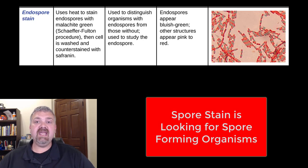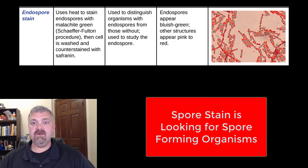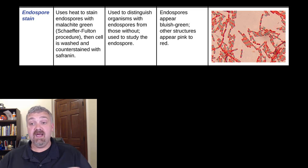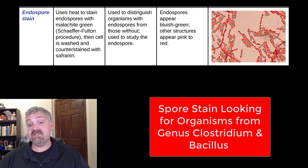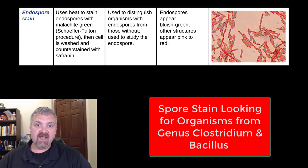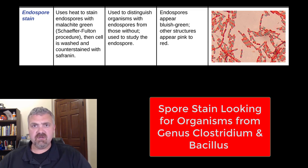Next we have the spore stain or the endospore stain. You'd use this anytime you are concerned you're dealing with a spore-forming organism, and that would be Clostridium and Bacillus. Bacillus — think Bacillus anthracis, the causative agent of anthrax, Bacillus cereus, Bacillus subtilis — these can sometimes cause foodborne illness.